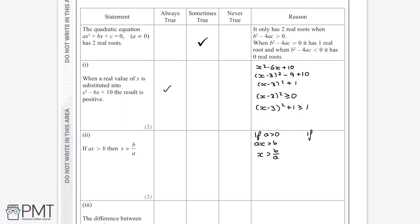And so if we did look at if a was less than 0, so if a was negative, and we still had ax is greater than b. In an inequality, if we divide both sides by a negative number, it causes the inequality symbol to flip.